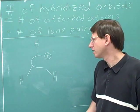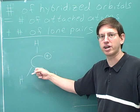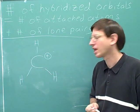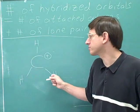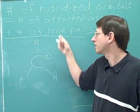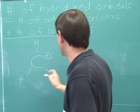Here we have a carbocation. What is the hybridization of this carbon? Well, there are three attached atoms and no lone pairs, so we would have 3 plus 0.